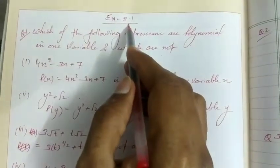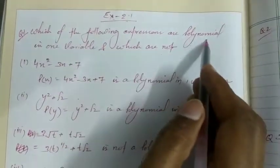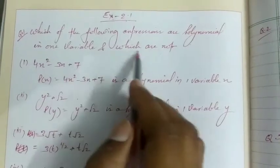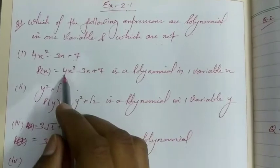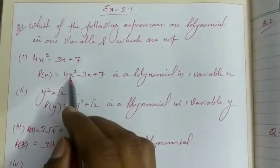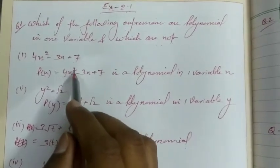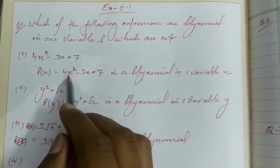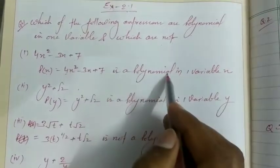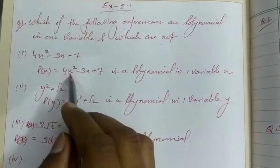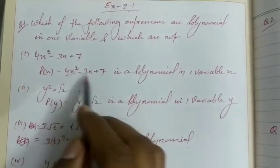Exercise 2.1, chapter: Polynomials. The first question asks which of the following expressions are polynomials in one variable. First part: 4x² - 3x + 7. In this expression, the power of the variable x is a positive integer, so by the definition of polynomial, this is a polynomial. Since there is only a single variable x, this is a polynomial in one variable x.